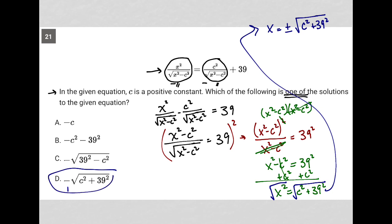right? It's just the minus version of this, because, of course, we could have a c squared plus 39 squared. That's one answer. And the other is the negative c squared plus 39 squared. So there's our answer listed, choice d.